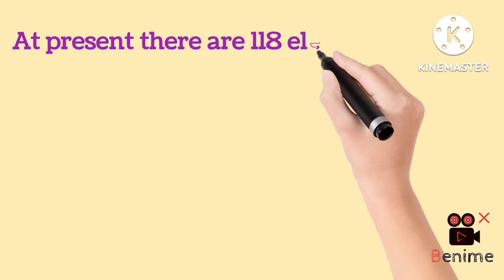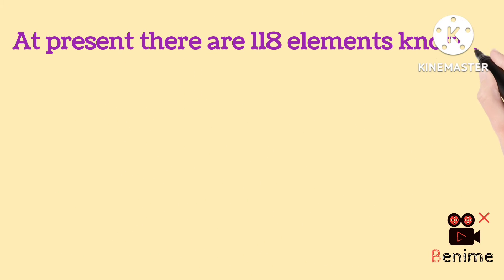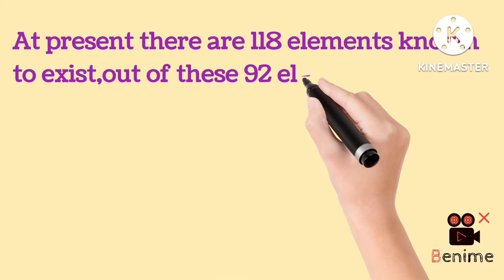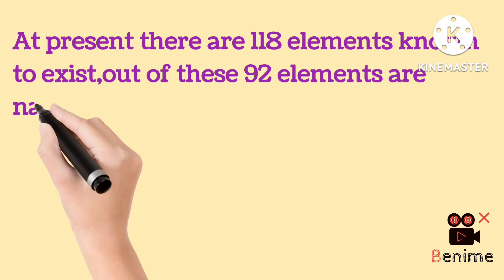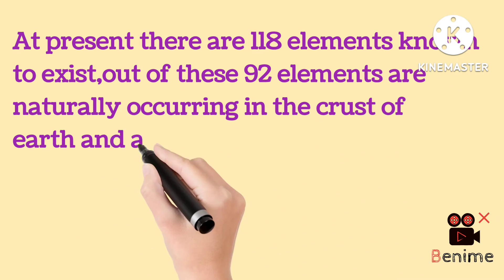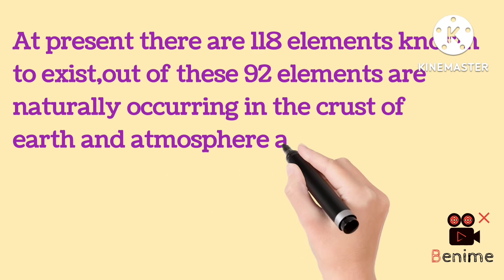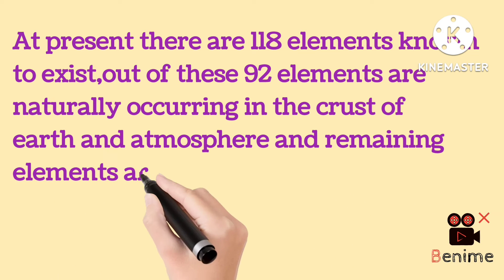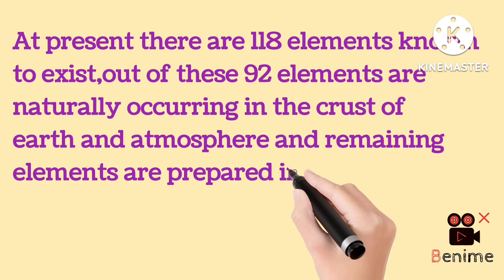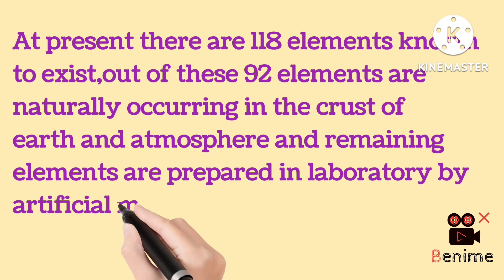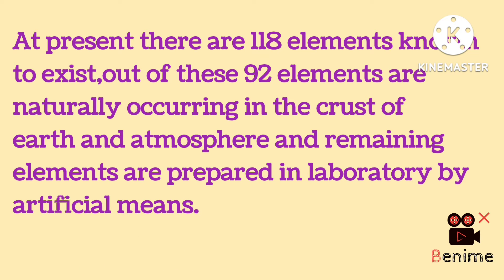At present, there are 118 elements known to exist. Out of these, 92 elements are naturally occurring in the crust of the earth and atmosphere, and the remaining elements are prepared in the laboratory by artificial means.